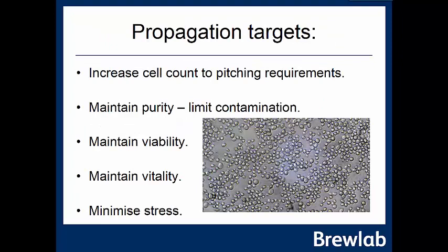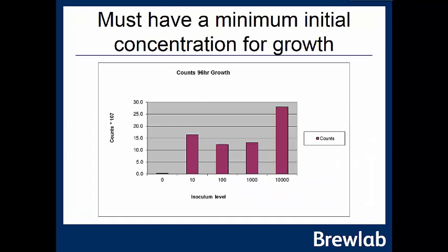In propagation we're looking to get the right cell count for pitching requirements — we want to culture up to the right point. We must keep it pure, avoiding contamination from bacteria or wild yeast. We want the yeast to be viable (alive) and vital (metabolically active and able to grow), and we don't want to stress the yeast too much because we'll get anomalous metabolisms.